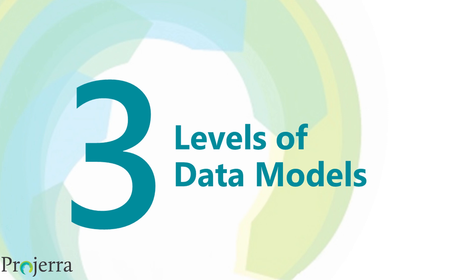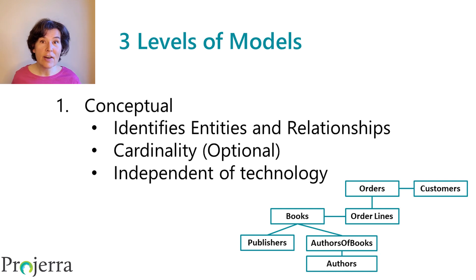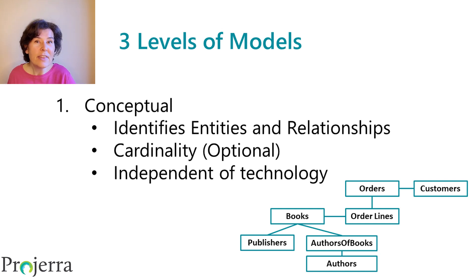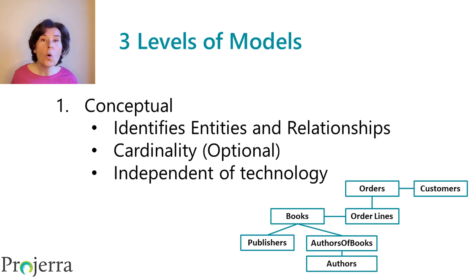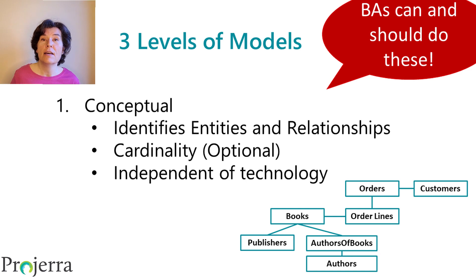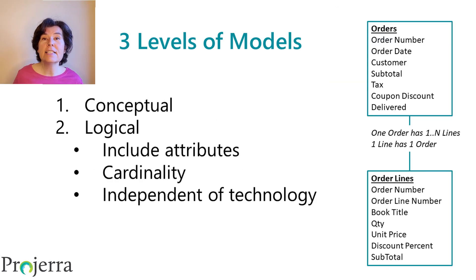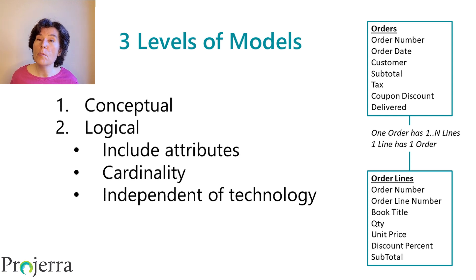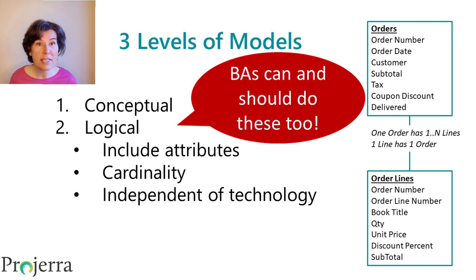Now let's talk about the three levels of data models. First, there is the conceptual model — it identifies entities and relationships, but no attributes. It may describe the cardinality of the relationship, but that's not required. Most importantly, the model is technology independent — it doesn't know or care whether you're storing the information in SAP, Oracle, a spreadsheet, or a filing cabinet. It represents the business concepts and business relationships, and thus these models can and should be prepared by business analysts. The second type is the logical model — it extends the conceptual model to include attributes associated with the entities and the cardinality of those relationships. Again, the model must be technology agnostic, and these models can and should be prepared by business analysts as well.